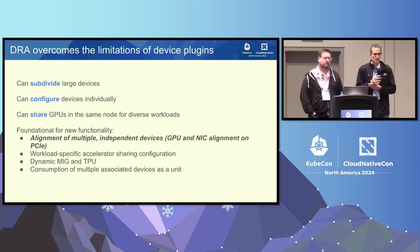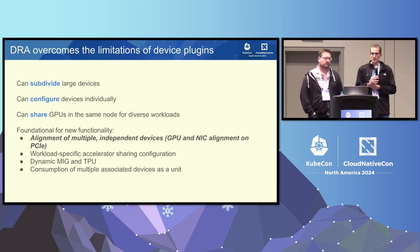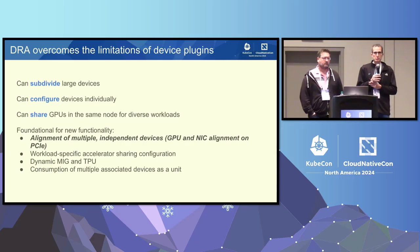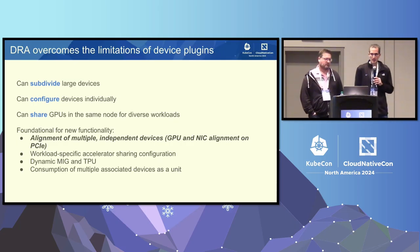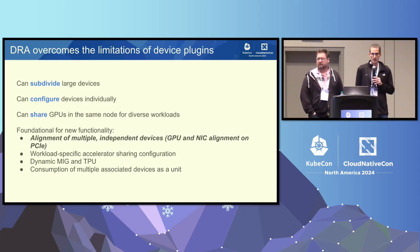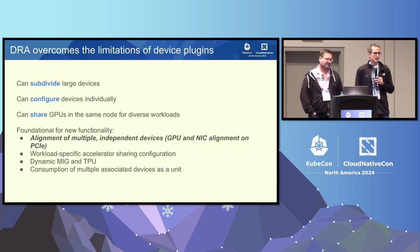Another use case is user-space workload sharing, which has different options available to workload authors. The API also allows a different kind of sharing — because we have a separate object, we can point different pods at the same resource claim; they will share that device. We can decide within a pod which container gets access to it. We are also preparing DRA for future extensions — Dynamic MIG is one example — and additional pieces will get added over time, similar to how volumes evolved.